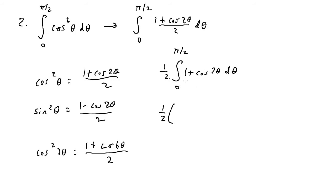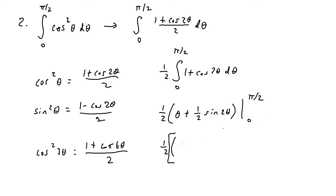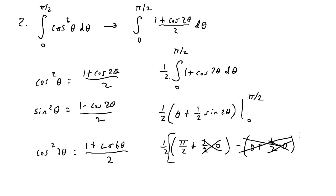Evaluating: the integral of one with respect to theta is theta, and the integral of cosine of two theta is one half sine of two theta. Evaluating from zero to pi over two: when I plug in pi over two, I get pi over two plus one half times sine of pi, which is zero. When I plug in zero, everything is zero. So all we have left is pi over two times one half, giving the final answer of pi over four.